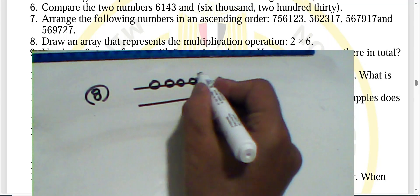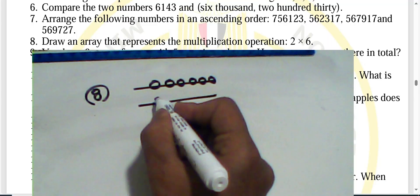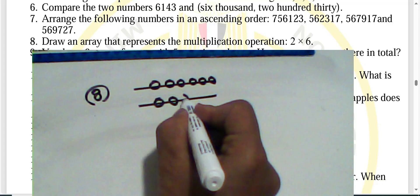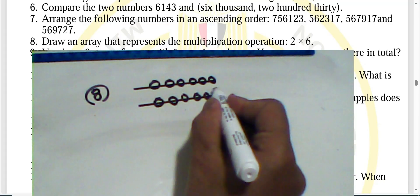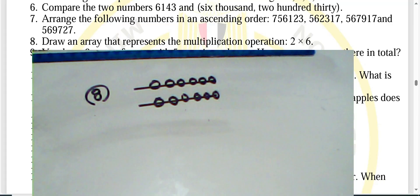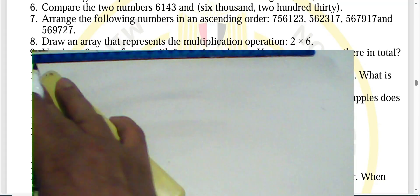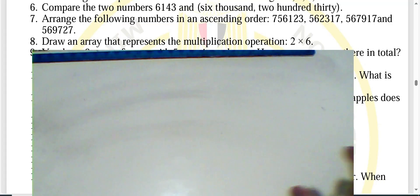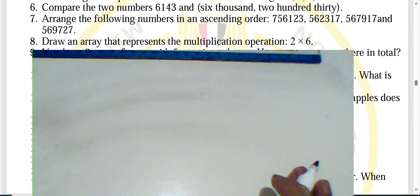Question eight: draw an array to represent two times six. We have two rows, each row containing six elements — giving a 2×6 array.